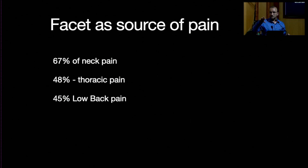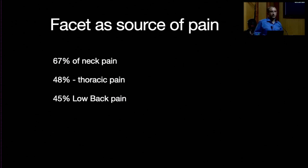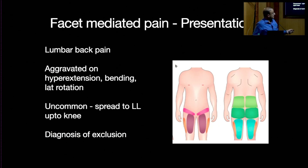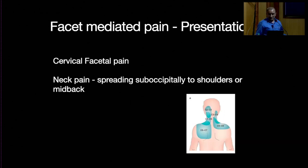For facet joints: 67% of neck pain is secondary to facet pathology, especially chronic neck pain; 48% of thoracic pain and 45% of low back pain have a facet origin. Facet-mediated pain is a diagnosis of exclusion. Presentation includes lumbar back pain aggravated on hyperextension and rotational movements. It may uncommonly spread to the lower limbs up to the knee, but generally does not go below the knee, helping differentiate it from radicular symptoms.